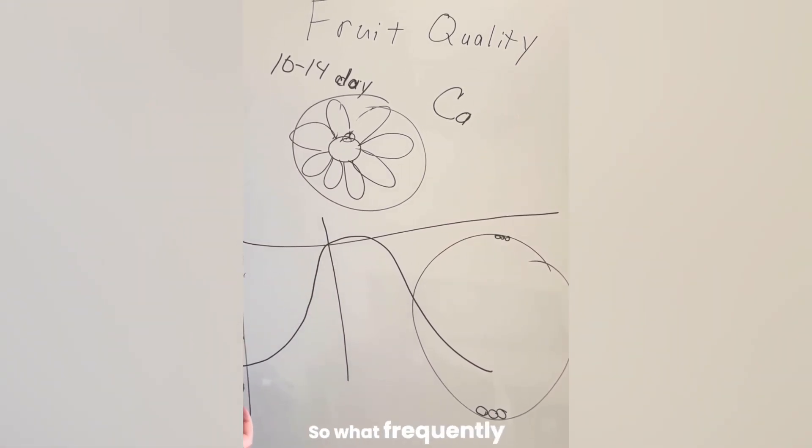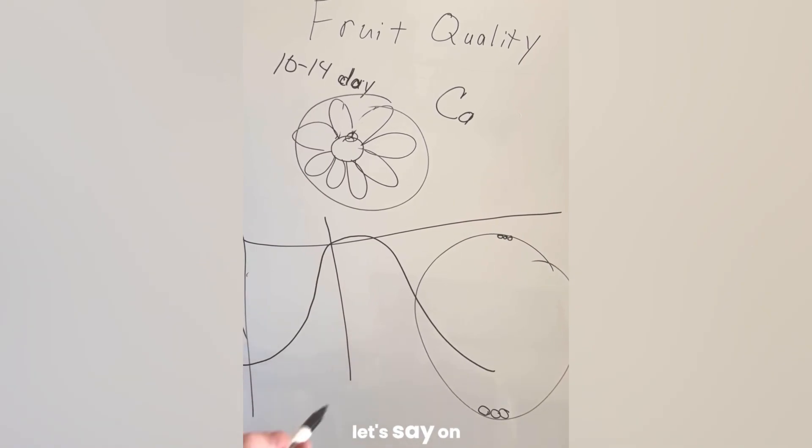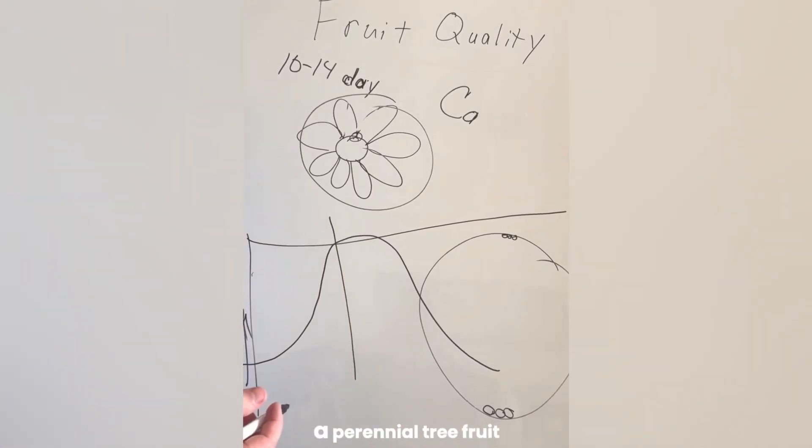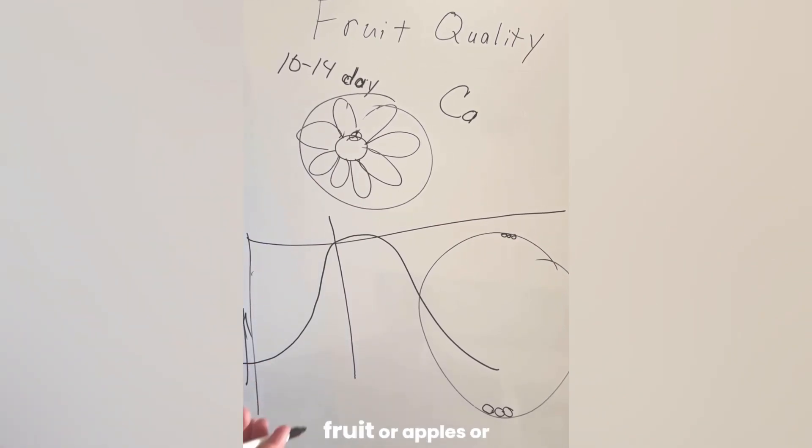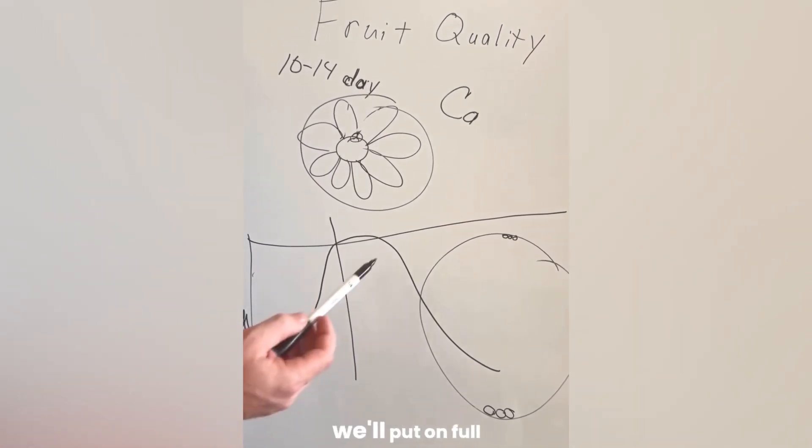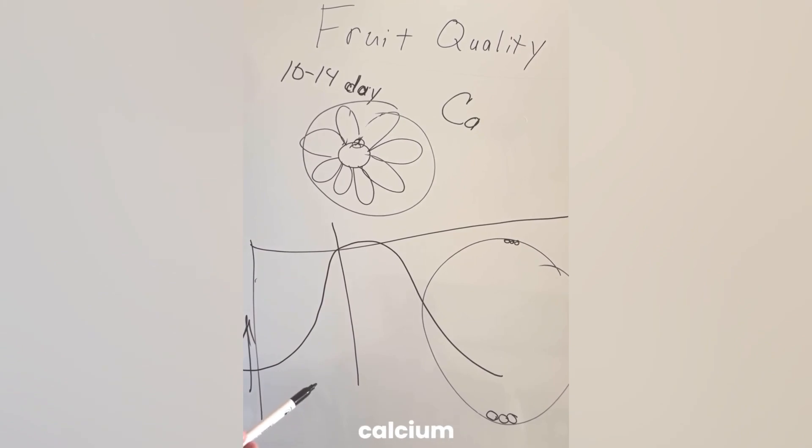So what frequently happens is, let's say on a perennial tree fruit crop, such as stone fruit or apples or something like that, we'll put on fall applications of gypsum or calcium amendments.